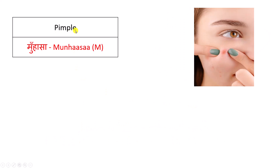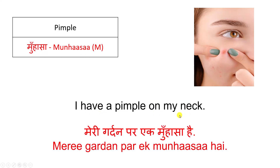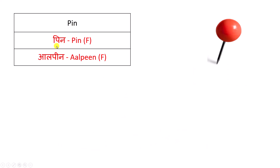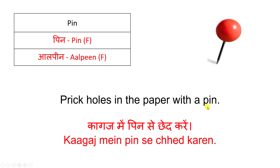Pimple — मुहासा। I have a pimple on my neck. मेरी गर्दन पर एक मुहासा है। गर्दन — Neck. मुहासा — Pimple. Pin — आल — पिन। Prick holes in the paper with a pin. कागज़ में पिन से छेद करें। कागज़ — Paper. Pin — Pin. छेद — Hole.